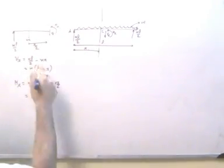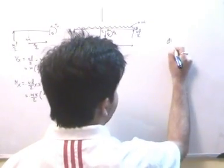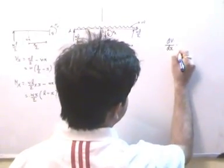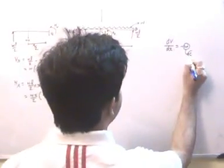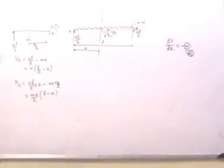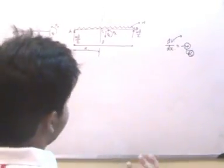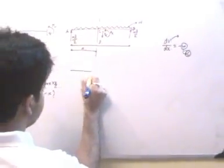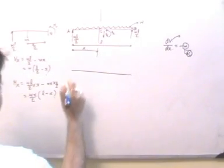This is my shear force equation and bending moment equation. For any value of X, we can get the shear force and bending moment. To draw the shear force diagram, since W is constant for a uniformly distributed loading system, V will be a straight line with some slope. At X equals zero, VX equals WL/2, a positive value.